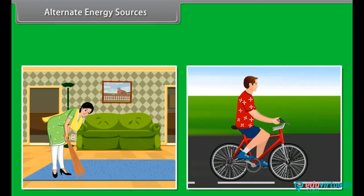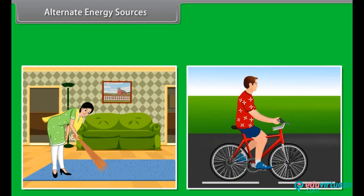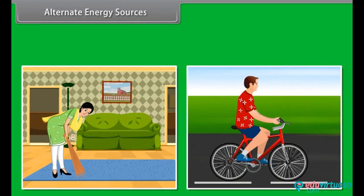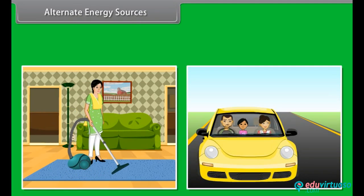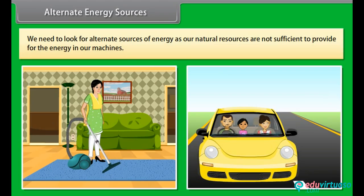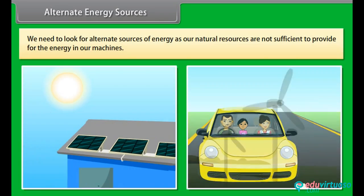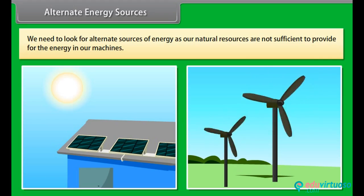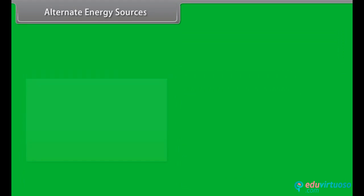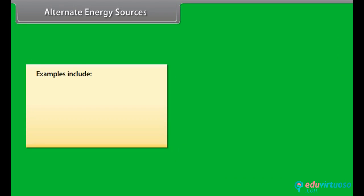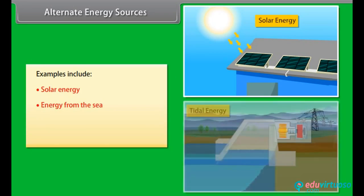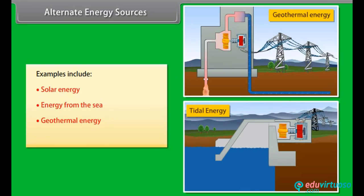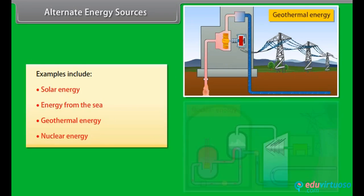Alternate energy sources. As we progressed, our day-to-day life activities also changed. We now get most of our work done by machines. Due to this, we need to look for alternate sources of energy, as our natural resources are not sufficient to provide for the energy our machines need. Examples include solar energy, energy from the sea, geothermal energy, and nuclear energy.